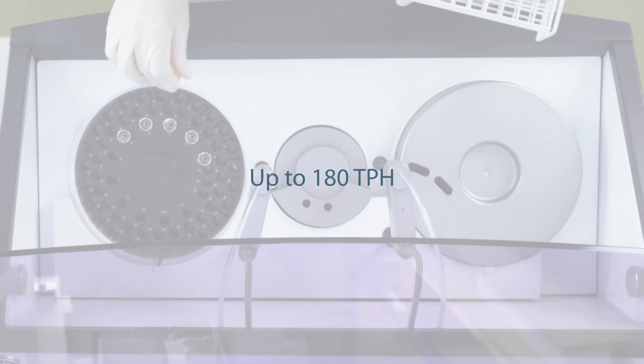In the fully automated operation, the operator simply loads barcoded samples on the rotor, touches process test, and walks away. The Selectra Pro-M will scan the sample IDs automatically, perform the programmed tests, and check the results against lab criteria. The system can typically perform up to 180 tests per hour.